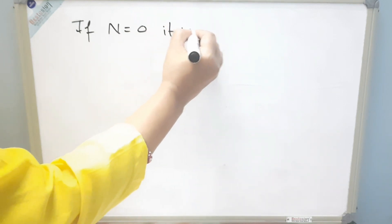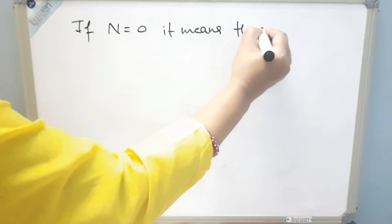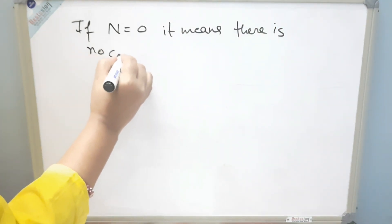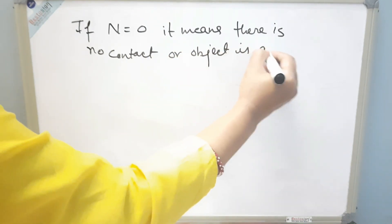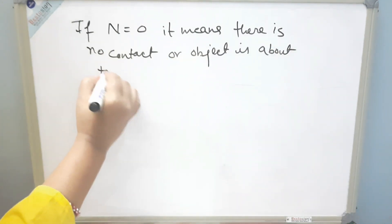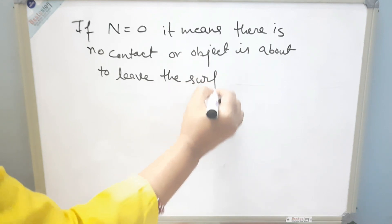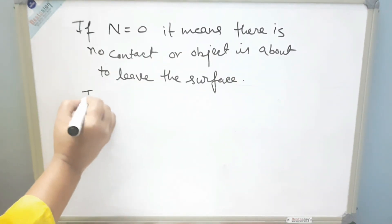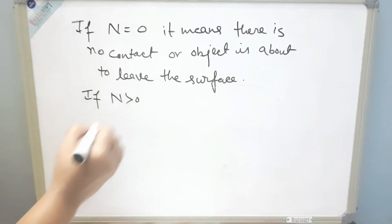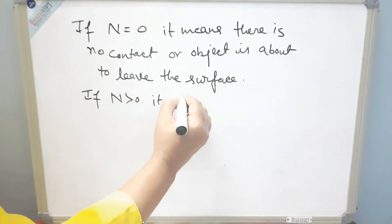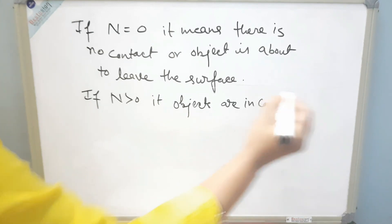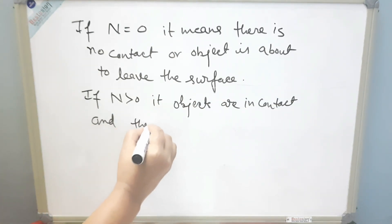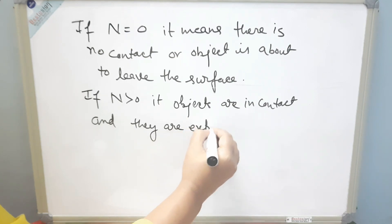If N equals zero, it means there is no contact, or the object is about to leave the surface. If N is greater than zero, it means the objects are in contact and they are experiencing a force.